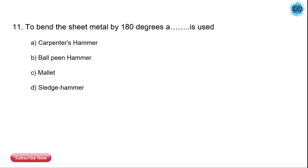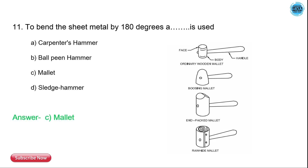The 11th question is: to bend the sheet metal by 180 degrees, what is used? The options are carpenter hammer, ball-peen hammer, mallet, and sledge hammer. The correct answer is mallet — we use a mallet to bend sheet metal by 180 degrees.